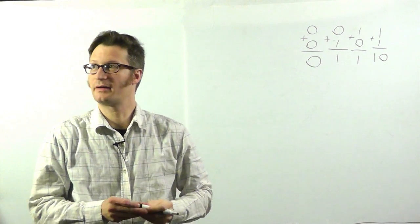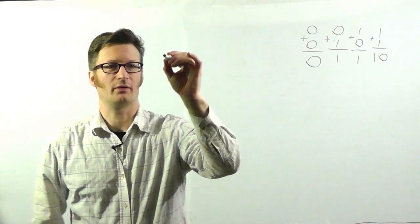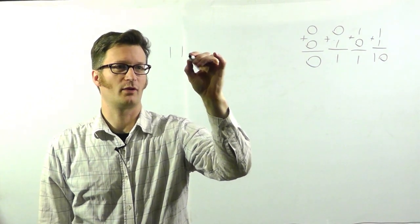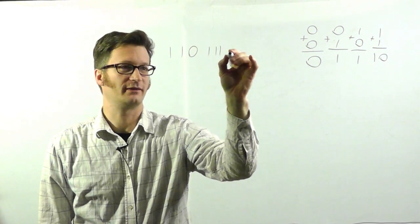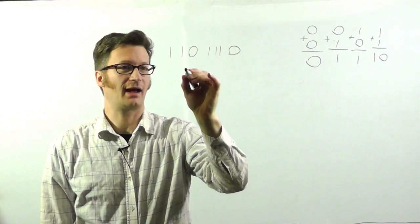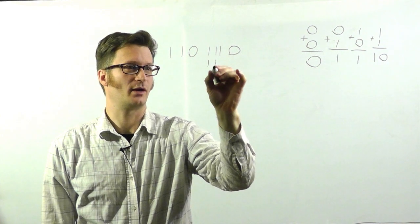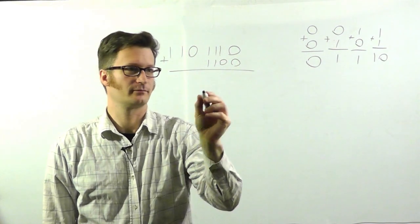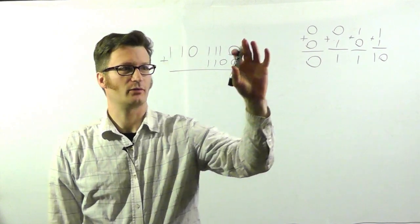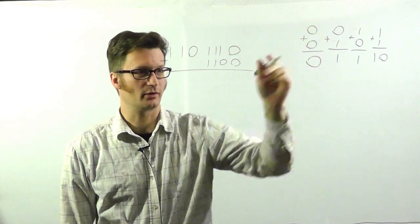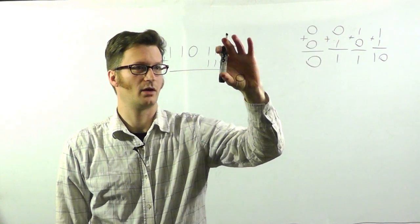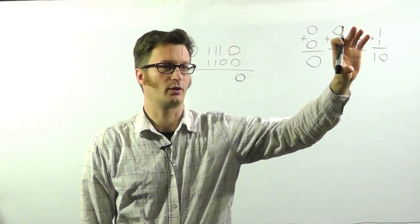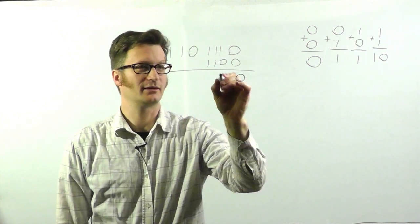Now let's take a look at an example. So we're going to add together 1, 1, 0, 1, 1, 1, 0. And we're going to add to that 1, 1, 0, 0. We'll look at the first column. 0 plus 0 is 0. 1 plus 0 is 1.